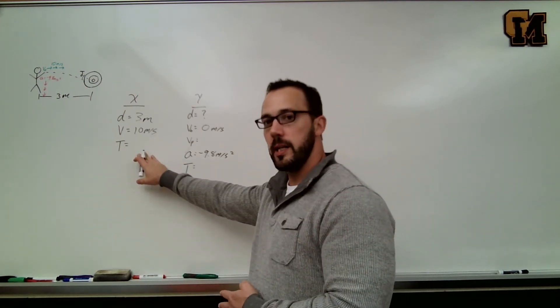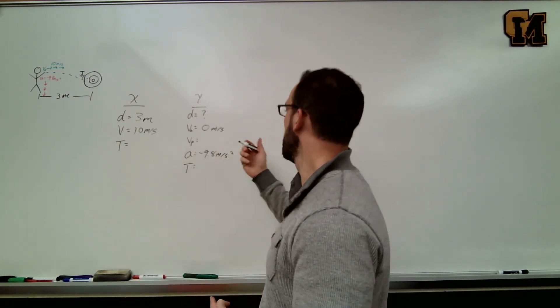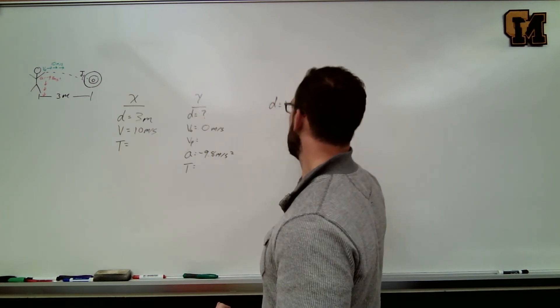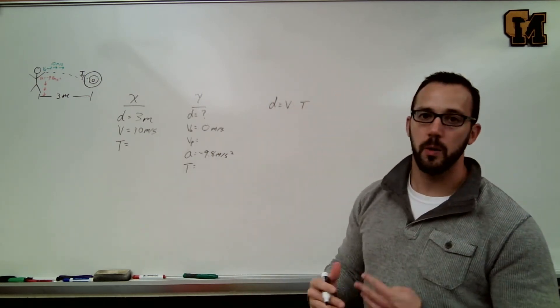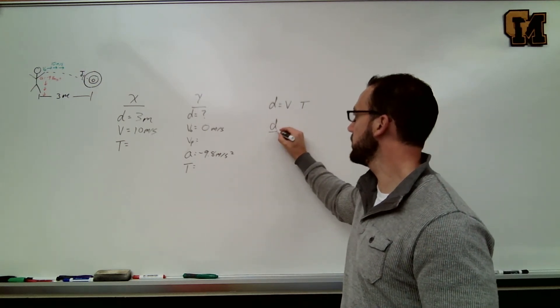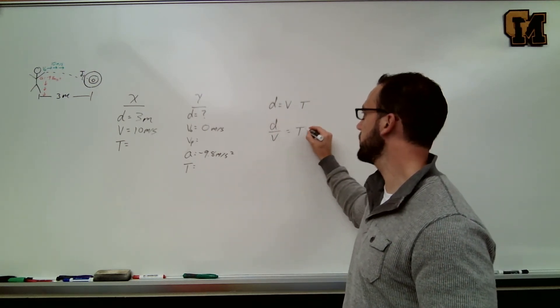So in the left and right direction, we have constant velocity. So we can just use our equation for constant velocity, d equals v times t. Rearranging that for time, I'm just going to divide the velocity over, so d over v equals time.